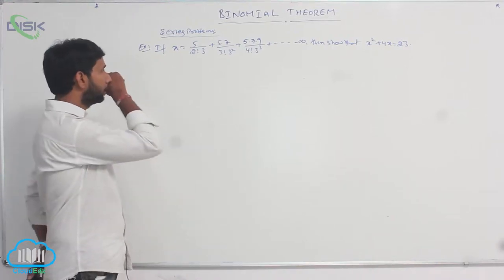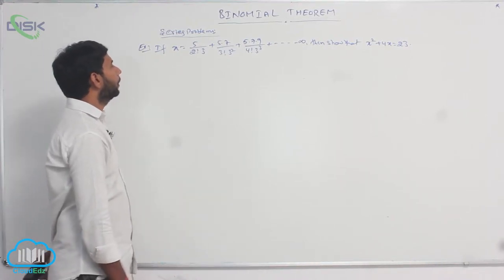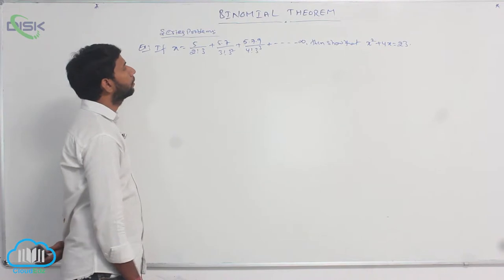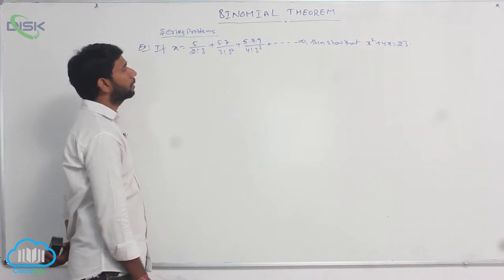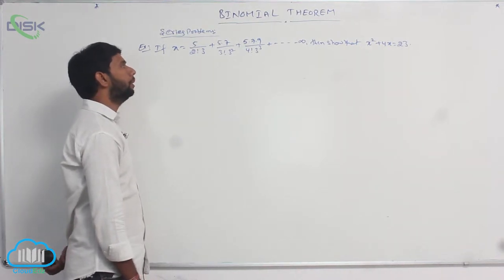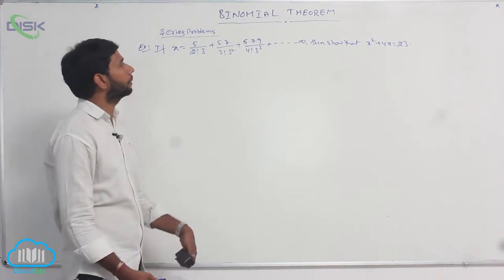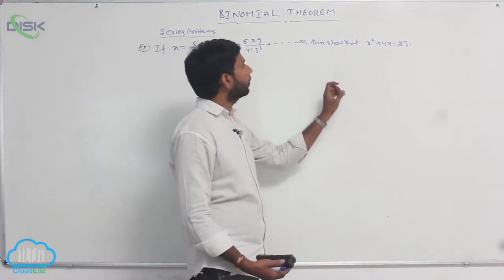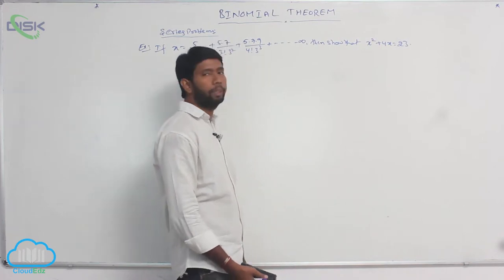In the next example, if S is equal to 5 by 2 factorial into 3, plus 5 into 7 by 3 factorial into 3 squared, plus 5 into 7 into 9 by 4 factorial into 3 cubed, and so on up to infinity, then show that x squared plus 4x is equal to 23.